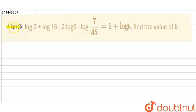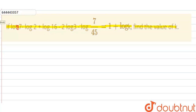Our question is: if log 7 minus log 2 plus log 16 minus 2 log 3 minus log(7/45) is equal to 1 plus log k, then find the value of k. There are two or three properties we need to use in solving this question.